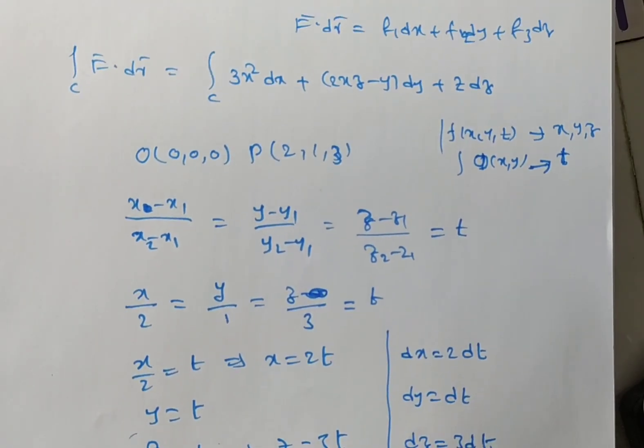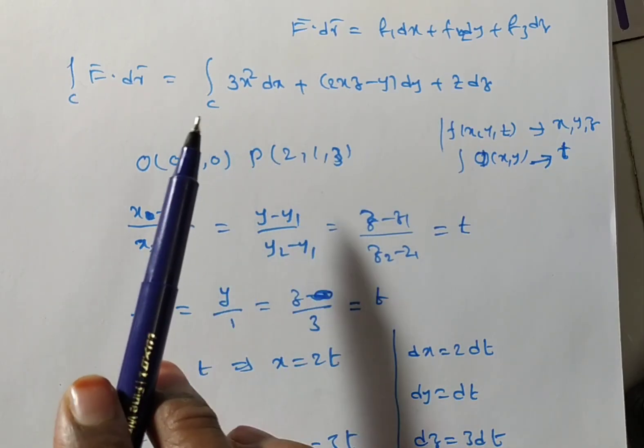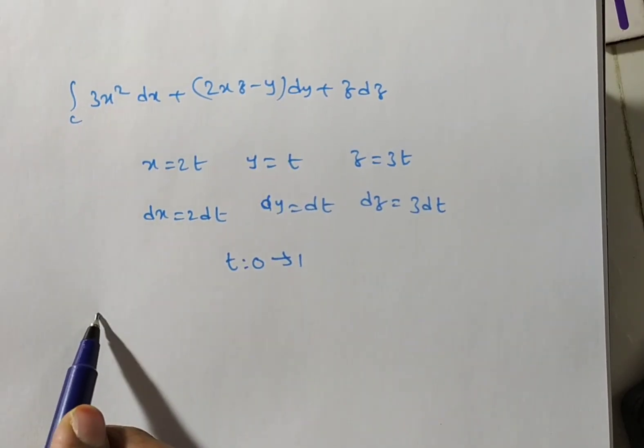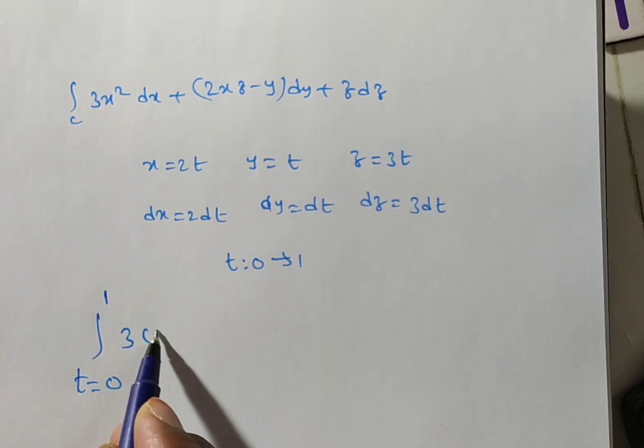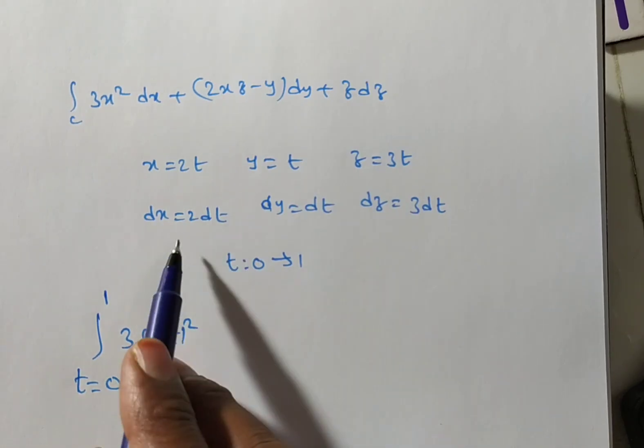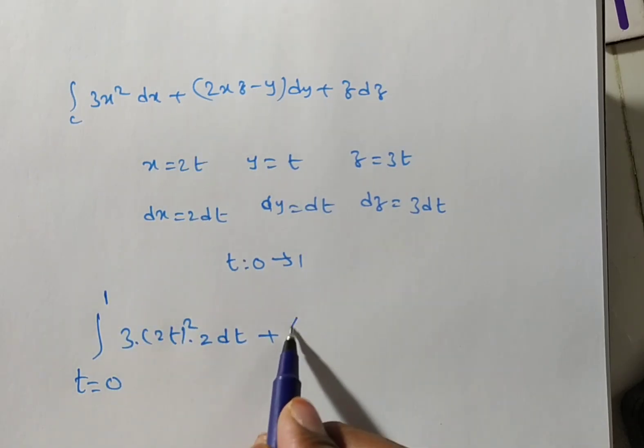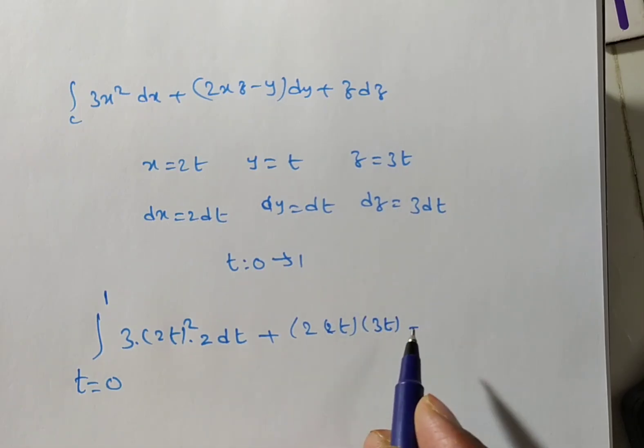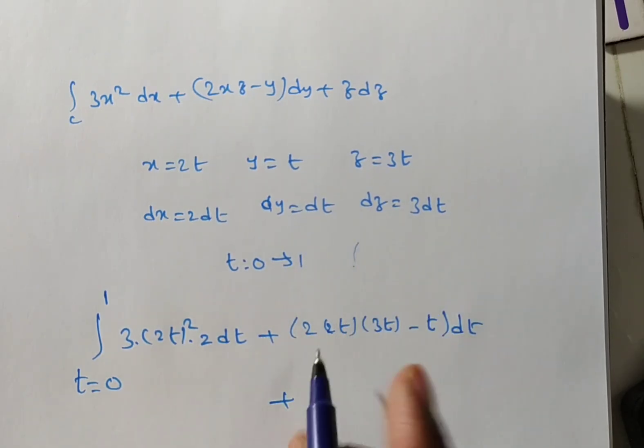Now, what we have to do? Just we have to change all the values. We have to substitute all the values in this equation. Now, the curve limits we have t equals 0 to 1. Next, 3 into x square, 3 into 2t whole square into dx. What is the dx I have? 2 dt. Plus, 2 into x, x is 2t, z is 3t minus y. What is y? t into dy. What is the dy? dt plus z. What is the z I have? 3t. What is dz? 3 dt.